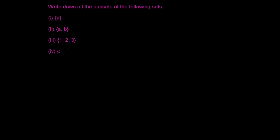In this video, let's try to learn how to write the complete subsets of a given set. In a previous video, I mentioned that to find the total number of subsets of a given set, we have a formula — a shortcut: just write 2 to the power n, where n represents the number of elements. So if you know the total number of elements in a given set, you can predict how many subsets are possible.